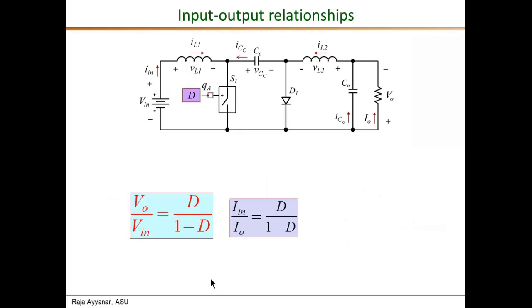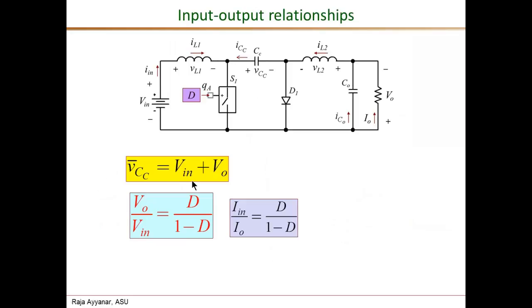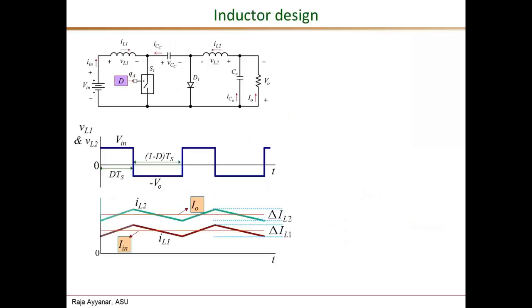We also derived the input-output relationship, for which we required the voltage across the coupling capacitor, which we derived as Vin plus Vo. The ratio Vo over Vin is D over (1 minus D), and the inverse relationship holds for the currents. This will be useful in the design, especially in expressing different values in terms of either the output voltage or the input voltage, and in terms of the output current or the input current.